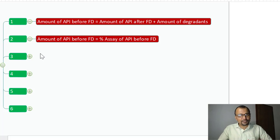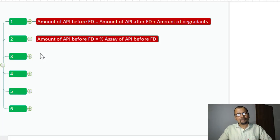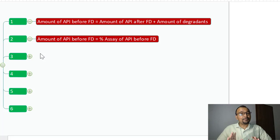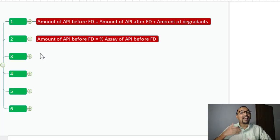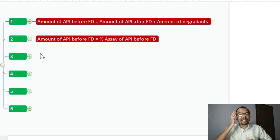How does one assess the amount of API before force degradation? You need an analytical method to quantify your drug substance. This can be done in two ways: either use the validated assay method to measure the percent assay of your drug substance or drug product, or alternatively, if you do not have a validated assay method for your API, you can quantify it using the related substances method with an adequate amount of response, to yield a precise assay result for your API.